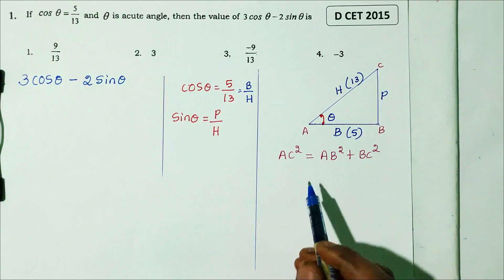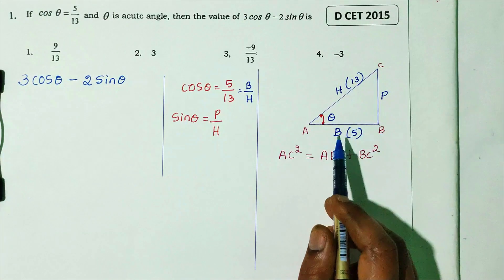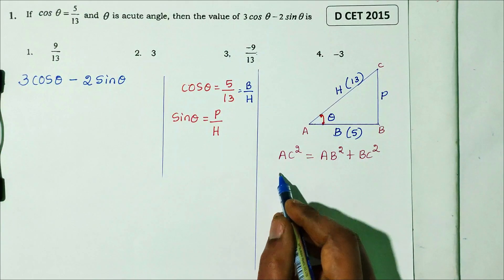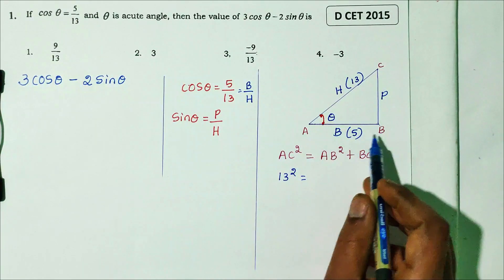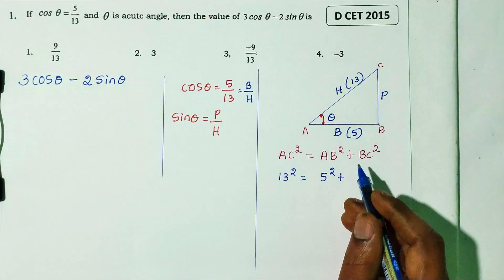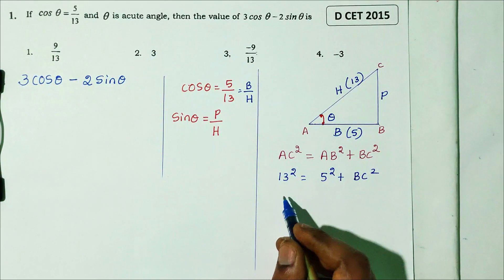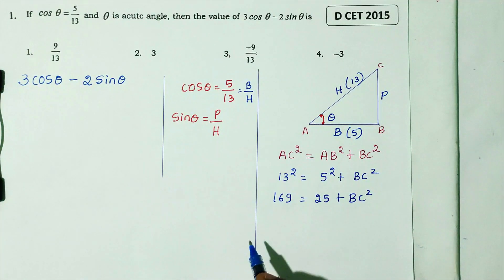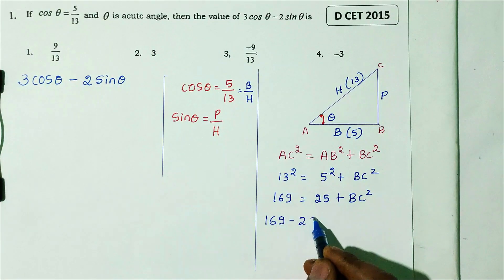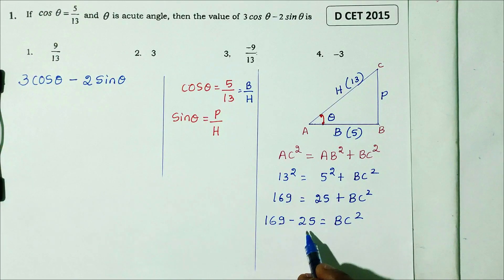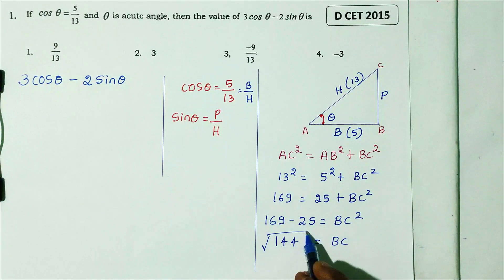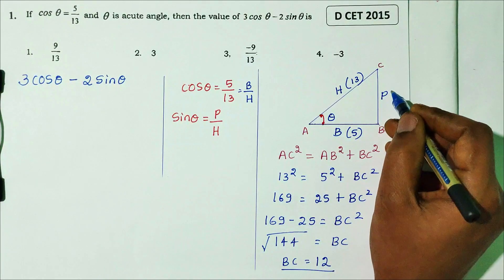Using the Pythagorean theorem: AC² = AB² + BC². So 13² = 5² + BC². That gives 169 = 25 + BC², so BC² = 169 minus 25 = 144. Taking the square root, BC equals 12. So the perpendicular is 12.